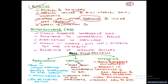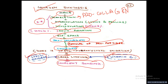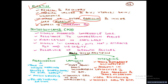Proteoglycans are highly hydrated compressible gels. They provide resistance to compression forces and are responsible for lubrication in cartilage. They have a high negative charge, which pulls sodium ions and attracts water, leading to viscosity. They also serve as a reservoir for growth factors.